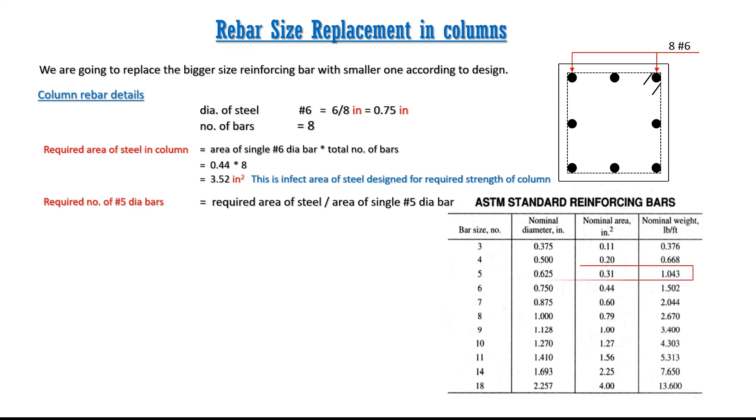Dividing 3.52 square inches with value of area of steel of bar size number 5 which is equal to 0.31 square inches, we have answer 11.35 which is approximately equal to 12.